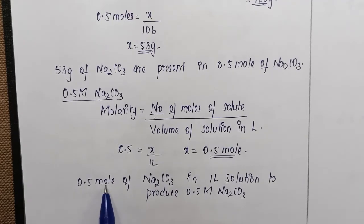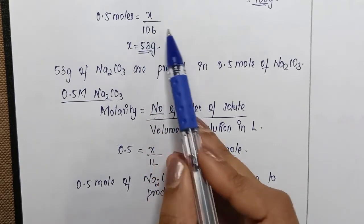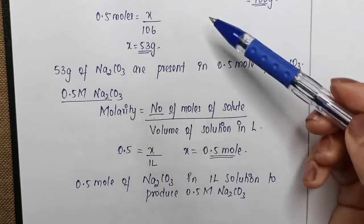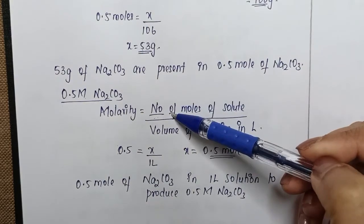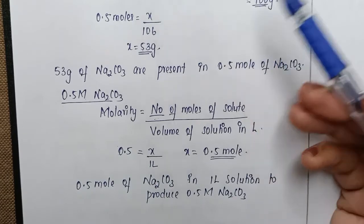And that 0.5 mole is nothing but 53 grams, that is what we calculated in the previous part. So this is how you differentiate between what is a mole and what is molar. This way it is easy for us to identify.